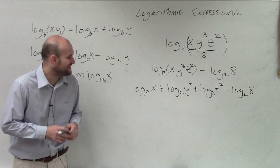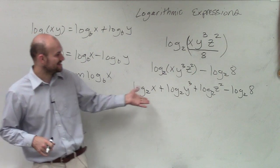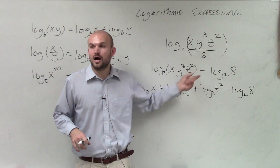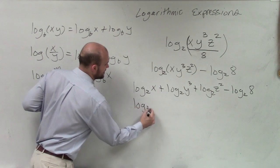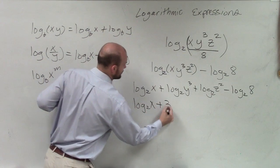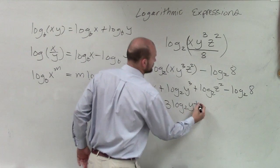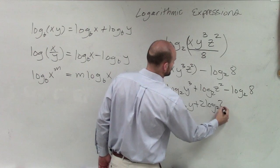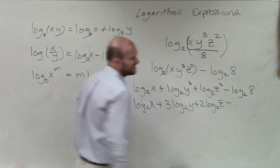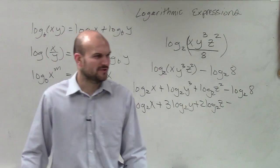So anyways, we have log base 2 of x. Now the last thing we're going to do is we're going to take our exponents and bring them down front. So we have log base 2 of x plus 3 log base 2 of y plus 2 log base 2 of z minus log base 2 of 8.